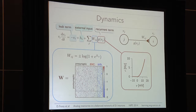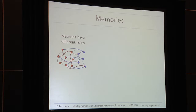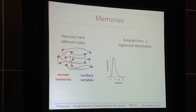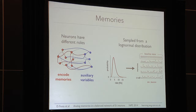This separation in populations is also important for the second basic ingredient: the memories. Neurons have different roles. Excitatory neurons carry the information and encode the memories, whereas inhibitory neurons are used as auxiliary variables to stabilize the system. Limiting ourselves to the excitatory population, we sample memories from a log-normal distribution. You can see examples of different memory patterns sampled from the distribution. Since memories are completely arbitrary, we added a baseline state in which all neurons fire at their average frequency, corresponding to no memory being recalled.